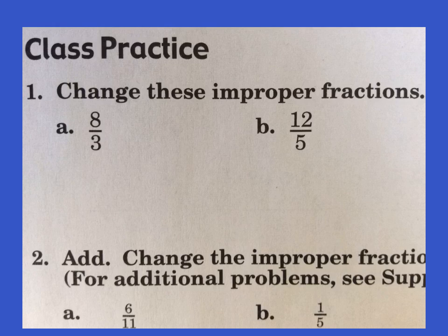Number one is going to be a little review of things we're doing, and then number two will be taking that and putting it into addition problems. We'll go ahead and get started with number one. 1A is telling us to change these improper fractions. The larger number is on top — that makes them improper. We need to change them into proper fractions, into the form of mixed numbers: a whole number and a fraction together.